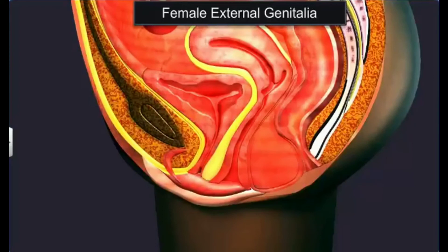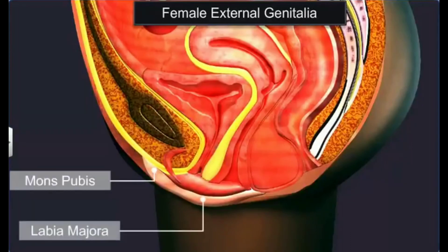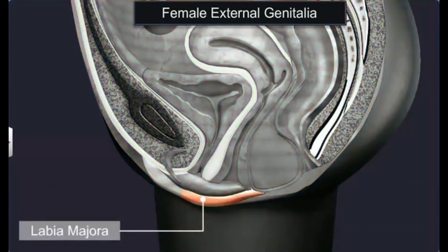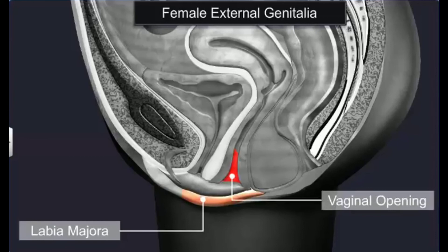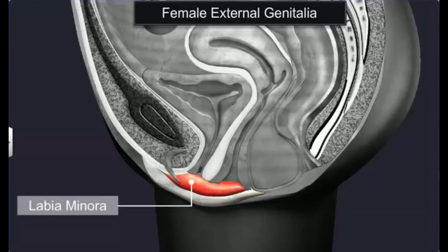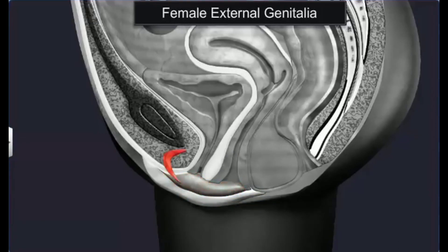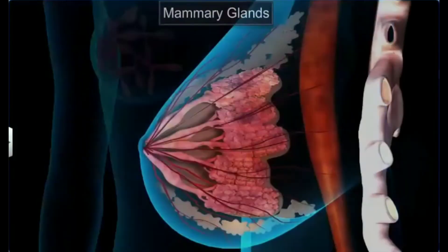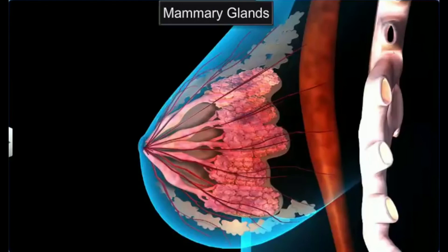The female external genitalia includes the mons pubis, labia majora, labia minora, and the clitoris. The labia majora contains fleshy folds of tissue that extend down from the mons pubis and surround the vaginal opening. Hidden under the labia majora is the labia minora. Towards its upper end lies the clitoris, a small finger-like structure, and below it is the urethral opening.